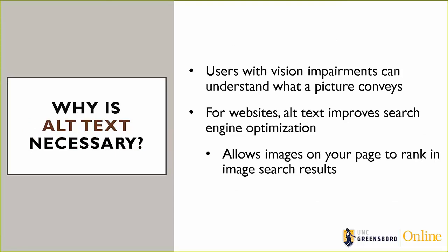Alt text is necessary for those who have vision impairment — whether partial blindness, complete blindness, or varying levels of impairment. Having that alt text allows them access to that picture and helps them understand what you want it to convey. But also for websites, alt text helps to improve search engine optimization. If you have a website with images and you've included alt text for those images, it will help to rank your page — for example, if someone is doing a Google image search, your properly labeled images can push your page further up in the rankings.